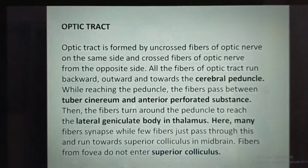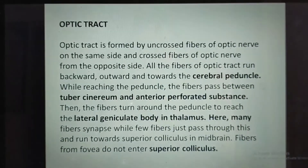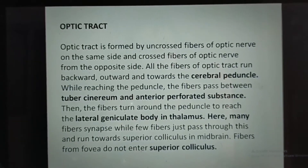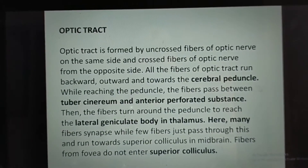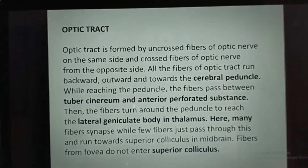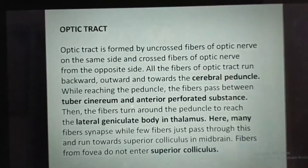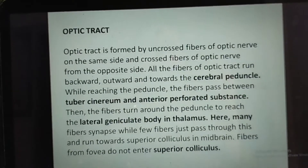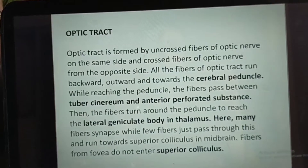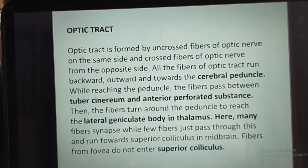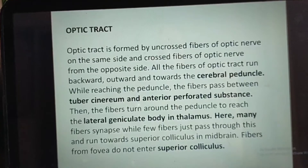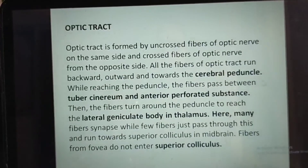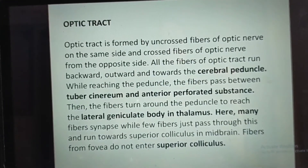The optic tract is formed by uncrossed fibers of the optic nerve on the same side and crossed fibers of the optic nerve from the opposite side. All fibers of the optic tract run backward, outward, and towards the cerebral peduncle. While reaching the peduncle, the fibers pass between the tuber cinereum and anterior perforated substance. Then the fibers turn around the peduncle to reach the lateral geniculate body in the thalamus. Here many fibers synapse, while few fibers pass through and run towards the superior colliculus in the midbrain.